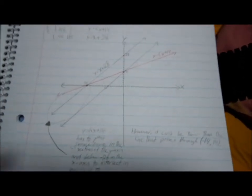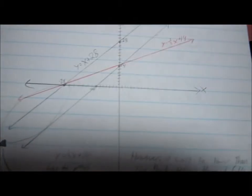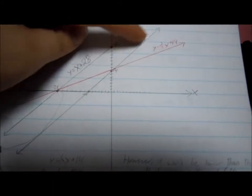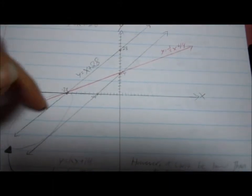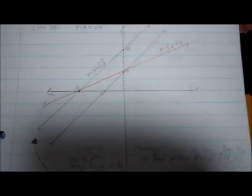And the red line right here is y equals 1 half x plus 14. And the line here is parallel to this line right here, and it is y equals x plus 14.